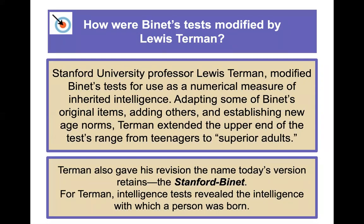Terman gave his revision the name it still holds today: the Stanford-Binet — a test he himself administered frequently as a school psychologist. For Terman, intelligence tests revealed the intelligence with which a person was born. Rather than just measuring which children might need help in school, he wanted to adapt the test to become a measure of inherited ability, going back to Francis Galton's original ideas.